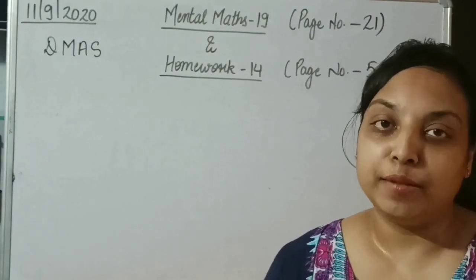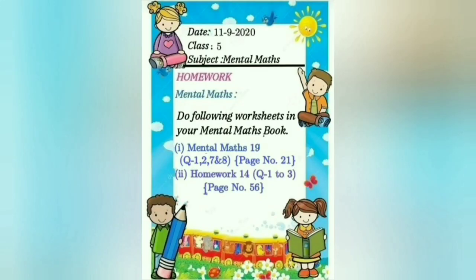Now it's time to get homework. Today's homework is: do following worksheet in your mental maths book. First, mental maths 19, in which you have to do question 1, 2, 7 and 8, that you can get on page number 21. And second, do homework worksheet 14, question 1, 2, 3, that you can get on page number 56. And you have to do this work in book.